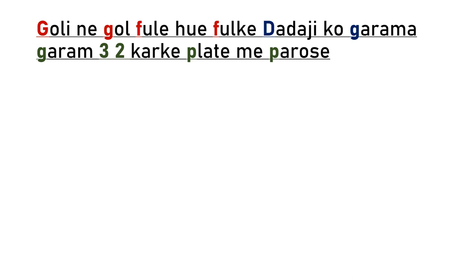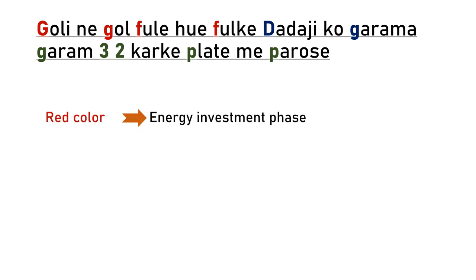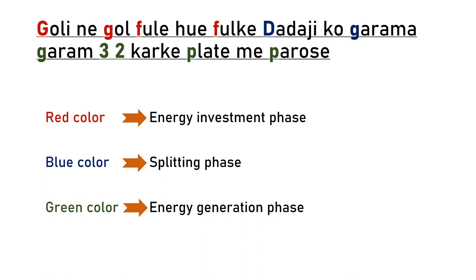You have to remember a specific sentence. In that sentence, some starting letters of words are highlighted in red, blue, and green. The red color indicates the energy investment phase, blue color indicates the splitting phase, and green color indicates the energy generation phase. As mentioned, there are ten different enzyme-catalyzed reactions in glycolysis: reactions one through four are the energy investment phase, and likewise for the blue and green color phases. Let's see what each letter actually means.